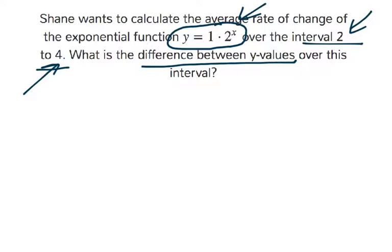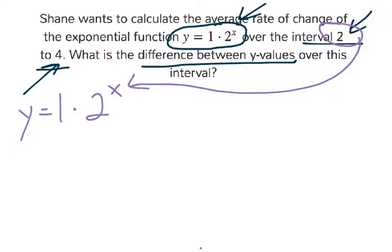Let's go ahead and plug in the 2 first. So that's the lower bound. I'm going to plug that into the equation here, y equals 1 times 2 to the power of x. Remember, I'm plugging in 2. Let's calculate that. y equals 1 times 2 to the power of 2. Well, 2 squared is just 4. So this becomes y equals 4.